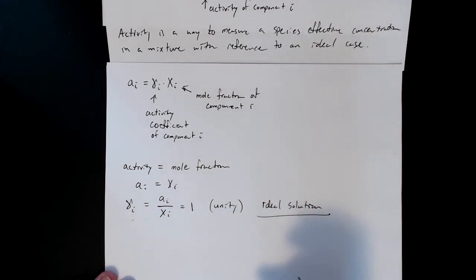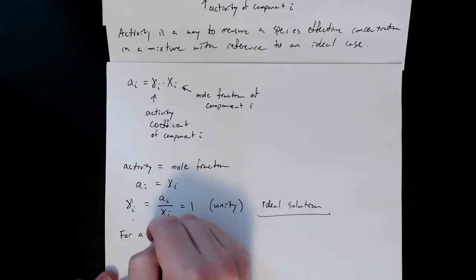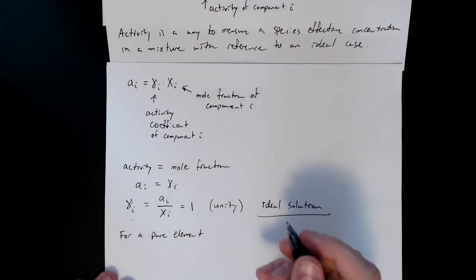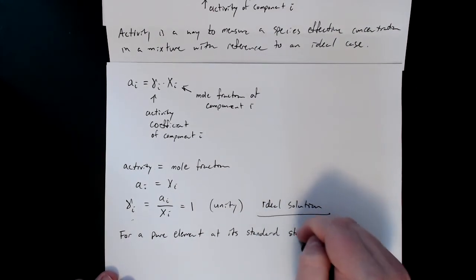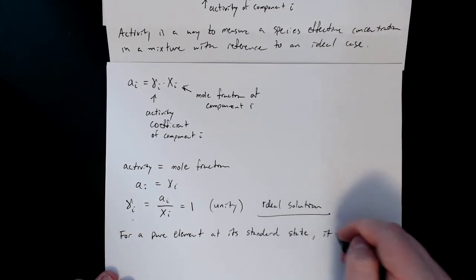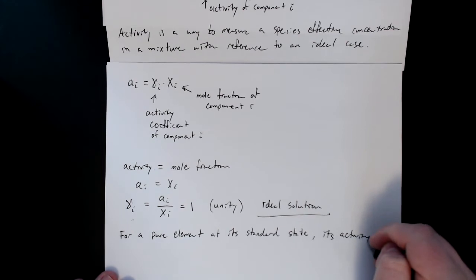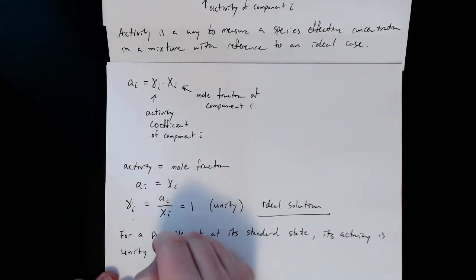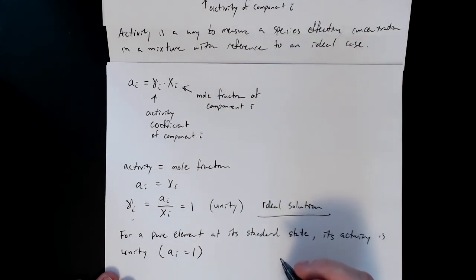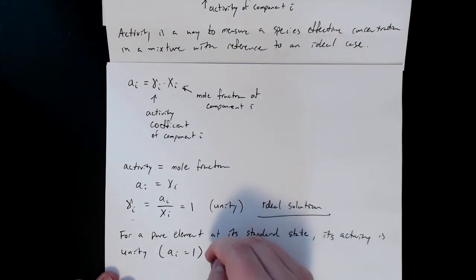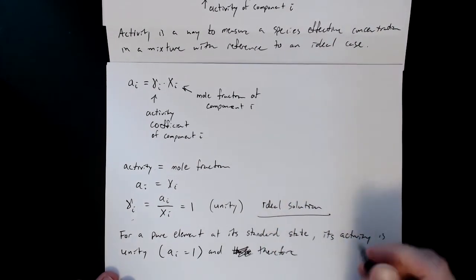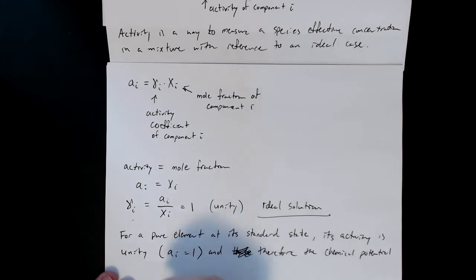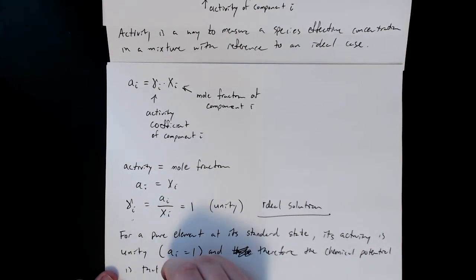A couple of notes: if we're talking about a pure element at its standard state, then its activity equals unity — the activity equals one. Therefore, the chemical potential is simply that of the standard state, μ_i = μ_i°.